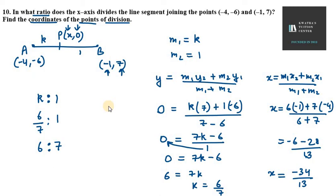So the required coordinate, the value for point P is x, 0 and x value is minus 34 over 13, so the point is minus 34 over 13, comma 0. So this is the value for P where the division occurs. This is your answer for question number 10.